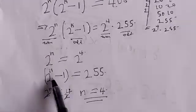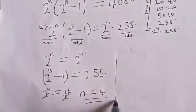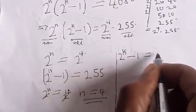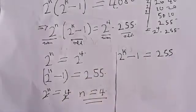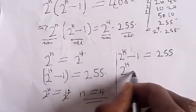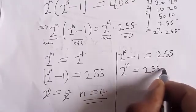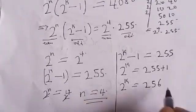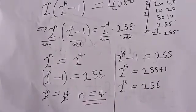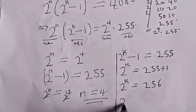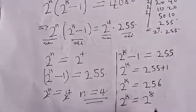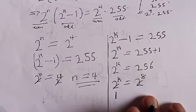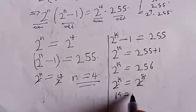Now let's solve for k. We have 2 raised to power k minus 1 equals 255. This implies 2 raised to power k equals 255 plus 1, which is 256. And 256 can be expressed as 2 raised to power 8. So 2 raised to power k equals 2 raised to power 8, which means k is equal to 8.